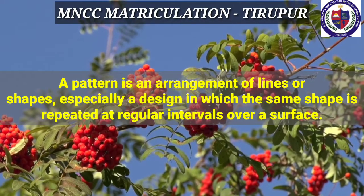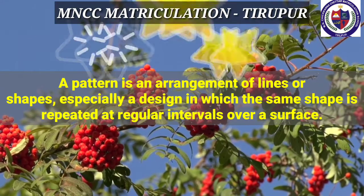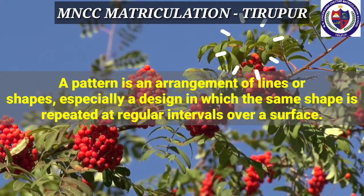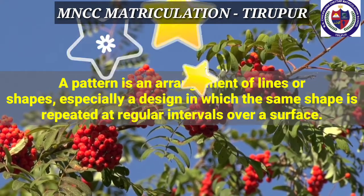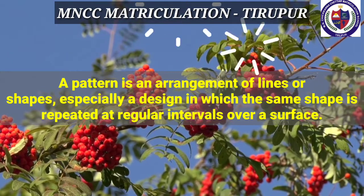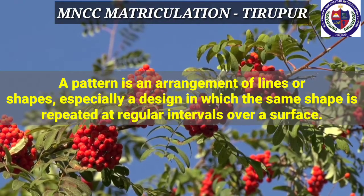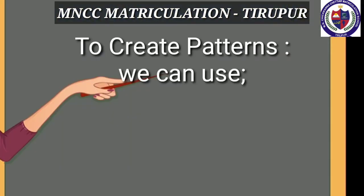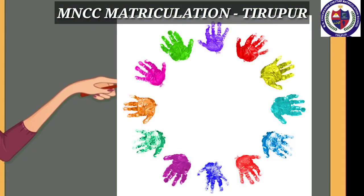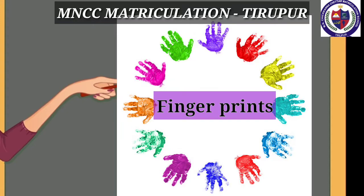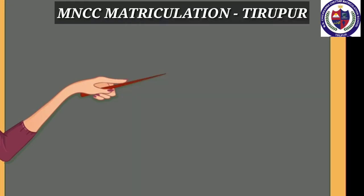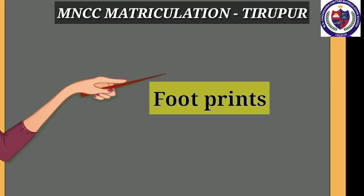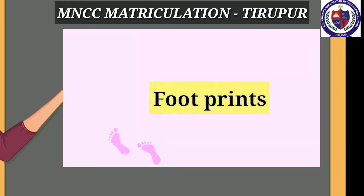Let us learn what is a pattern. A pattern is an arrangement of lines or shapes or a design which may be the same size or type, that can be repeatedly occurring to cover the surface — that is called a pattern. To create a pattern, we can use different materials. See the given picture: different colors of fingerprints are used to make a pattern.